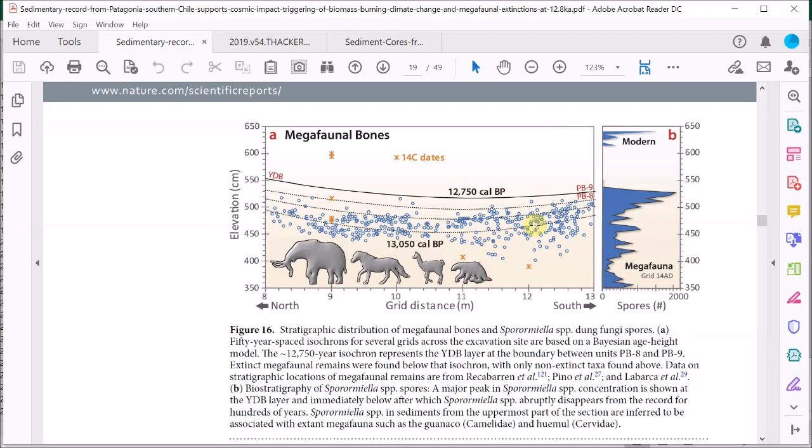Well, actually the authors come up with a really nice explanation. They point out that the bones indicate megafauna dying, not megafauna living. The spores show that after the megafauna stopped dying, their numbers increased.